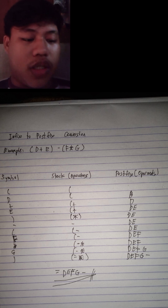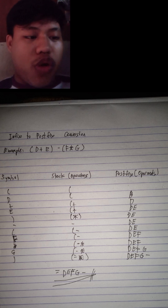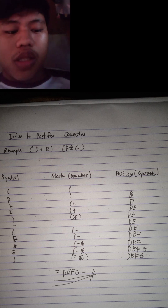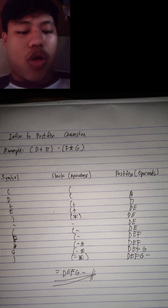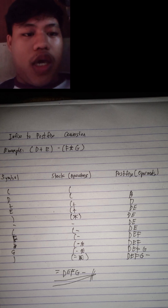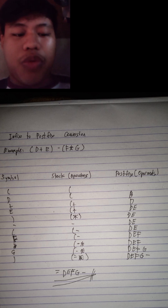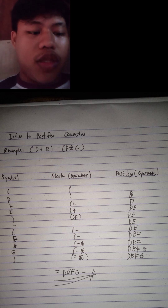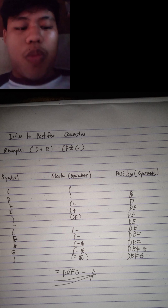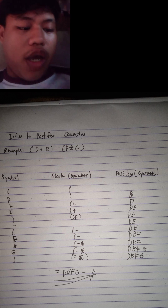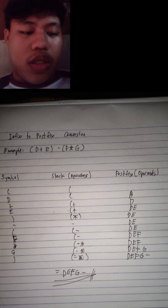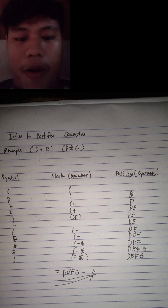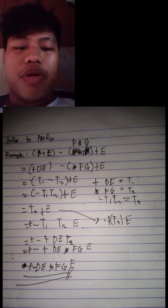You will put the close parenthesis in symbol. In the stack operators, you will put the open parenthesis, minus, multiplication symbol, and close parenthesis. In postfix, you will put D, E, F, G, and the minus sign. In the last line, the multiplication will pop up, and the result is D E F G times minus. That is the result of our infix to postfix example.